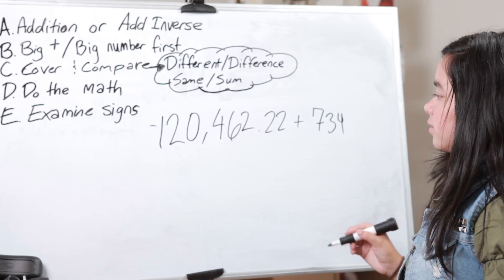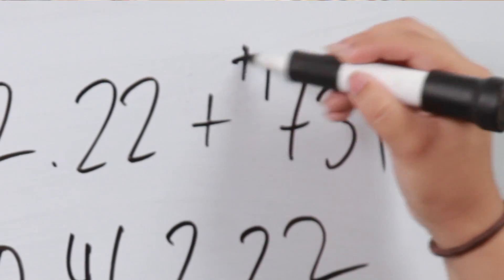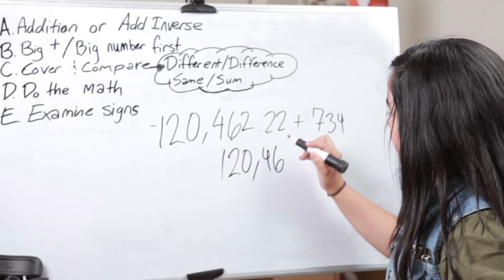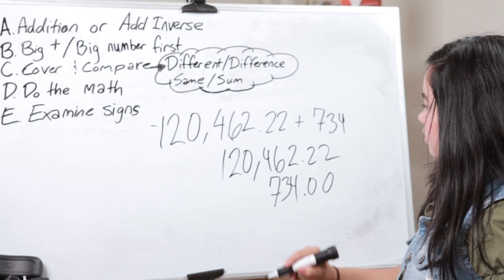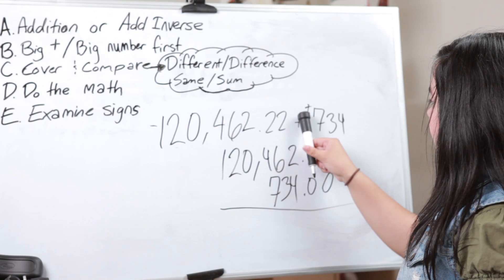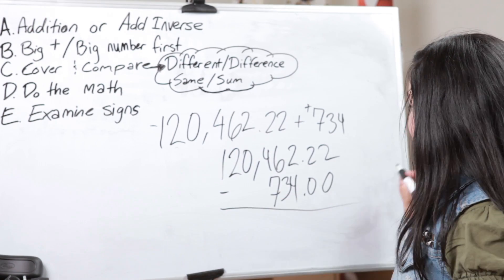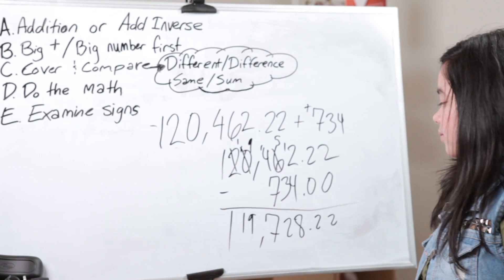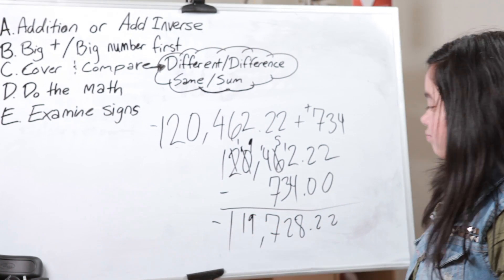B — Big positive. Put the big positive sign next to the 734, and put the big number first — write it on top. Now C — cover and compare the signs. We have different signs, so we are going to subtract. D — do the work. And then lastly, E — examine the sign. In the original problem the negative is with the bigger number, so the answer will be negative 119,728.22.